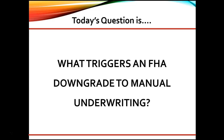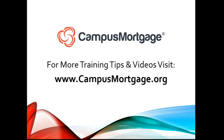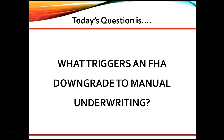The borrower has undisclosed mortgage debt, or business income shows a greater than 20% decline over the analysis period. This concludes our one-minute video. Don't forget to download our course catalog at campusmortgage.org.